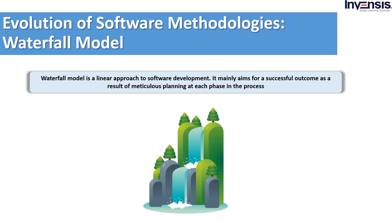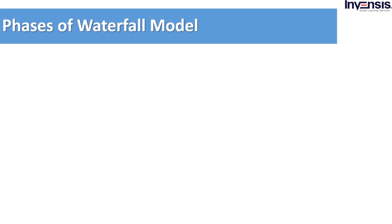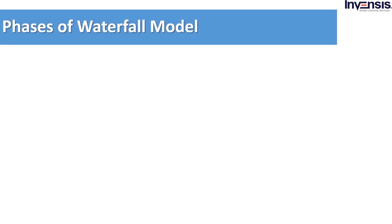It has distinct goals for each phase of development. Imagine a waterfall on the cliff of a steep mountain — once the water has flowed over the edge of the cliff, it cannot turn back. In the waterfall model, the requirement has to be provided beforehand and in full. The idea of this model was that it's going to be stable for many years. Let's quickly look into the different stages of waterfall model.